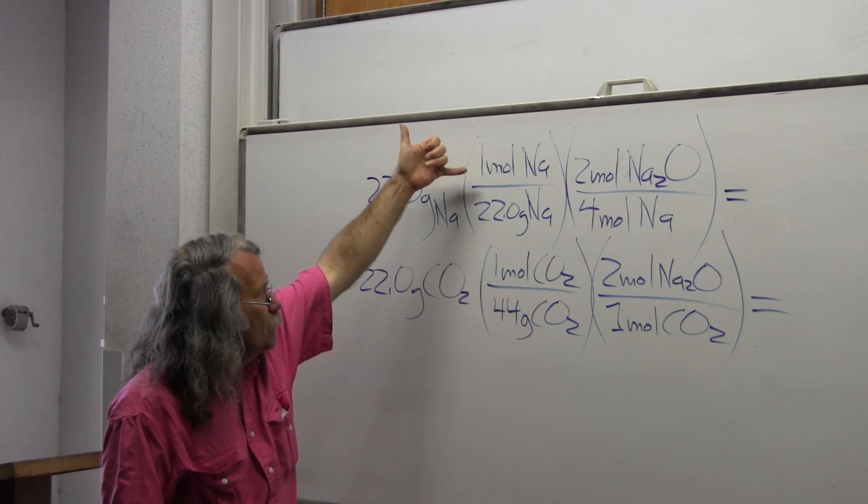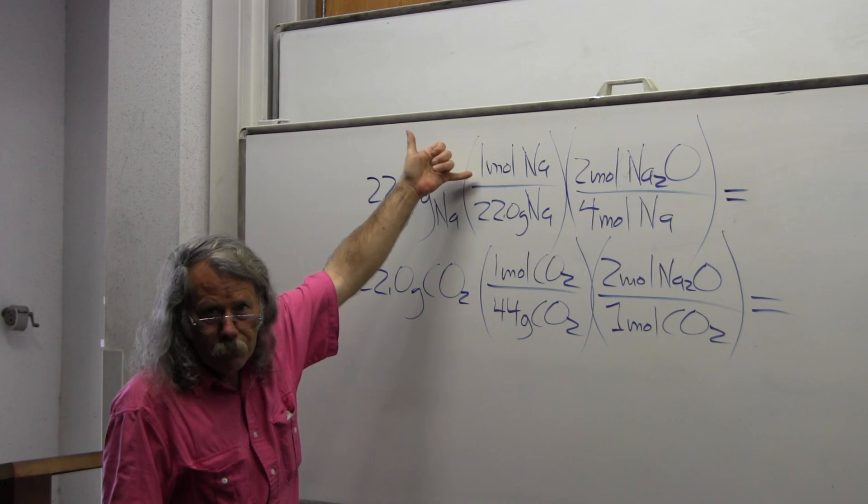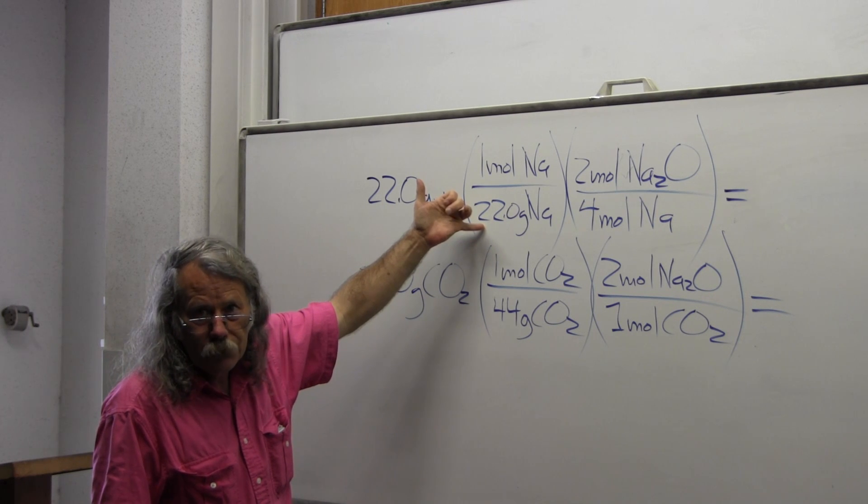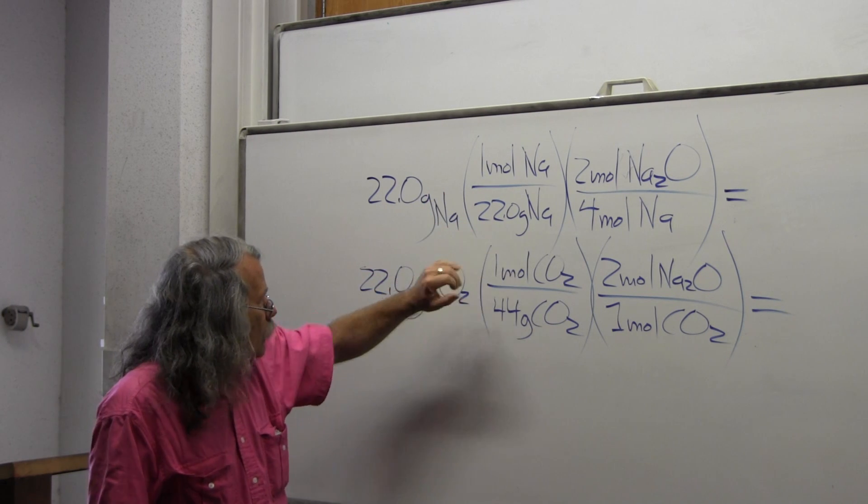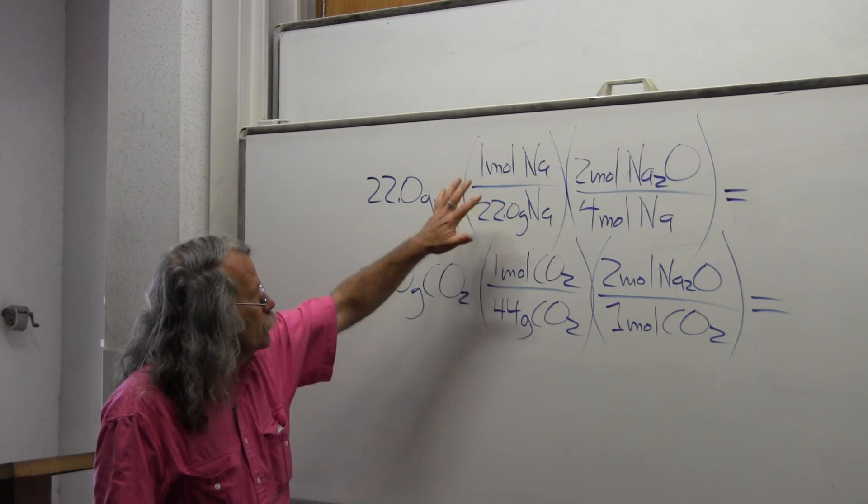The moles of sodium go in the numerator and the grams of sodium go in the denominator, so the grams of sodium cancel. I go from grams of sodium to moles of sodium.